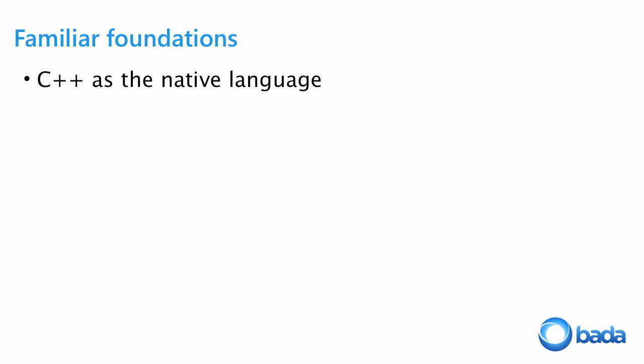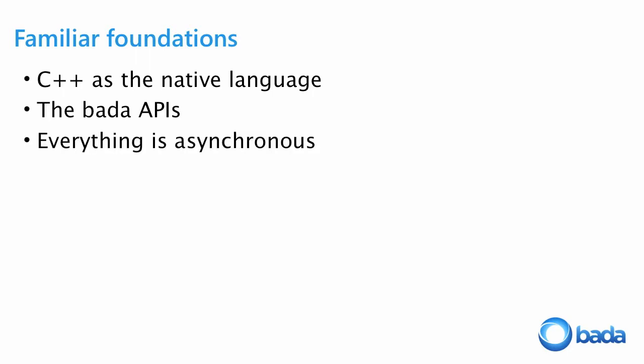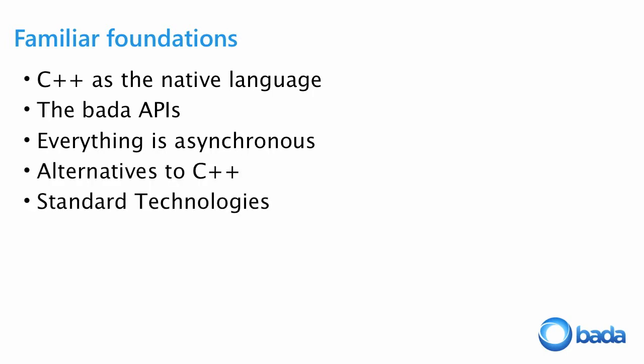Bada uses C++ as its native language. We have well-organized APIs that make it easy to find what you want and map it to what you're familiar with. Everything is asynchronous — we'll talk about that. We'll also cover alternatives to C++ like Flash and web development, standard technologies like OpenGL, and how network security in Bada matches up to other development environments.